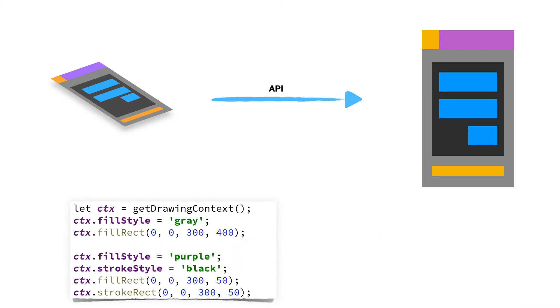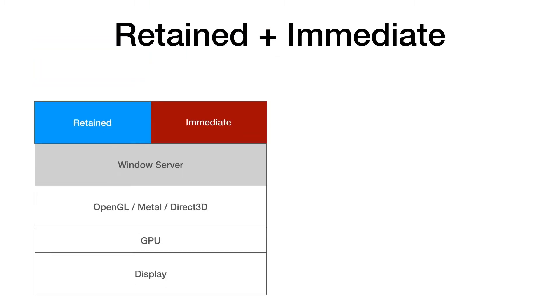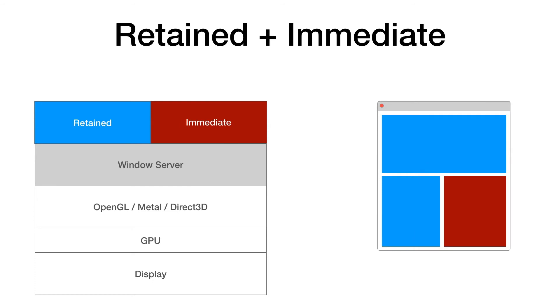One thing you can glean from Immediate mode is that memory usage is far lower — in fact, it's just the size of the bitmap plus some housekeeping. So you can use this to create high-volume, large sets of graphics without worrying about overflowing your memory. The Retained and Immediate modes of rendering have become so popular that most systems actually offer both. A typical graphics stack will offer both Retained and Immediate mode APIs, and these two can even live together in the same window — some parts rendered with Retained mode and some with Immediate mode, depending on your needs.